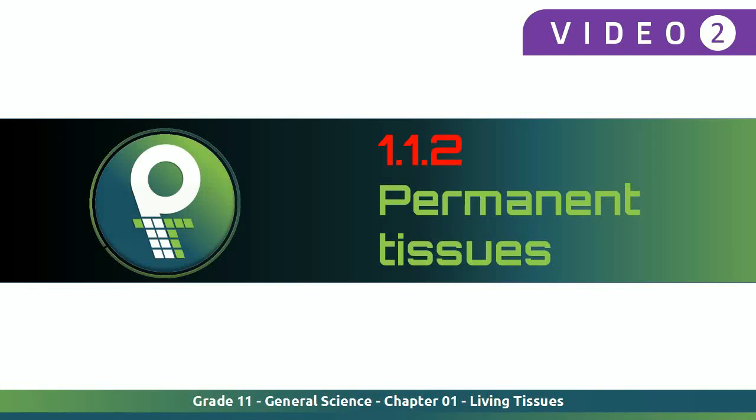I bow on to you all, one more time. We are in this beautiful chapter of Grade 11 general science, and this is chapter number 1. We will continually talk about living tissues. Today, we are going to speak about the permanent tissue.